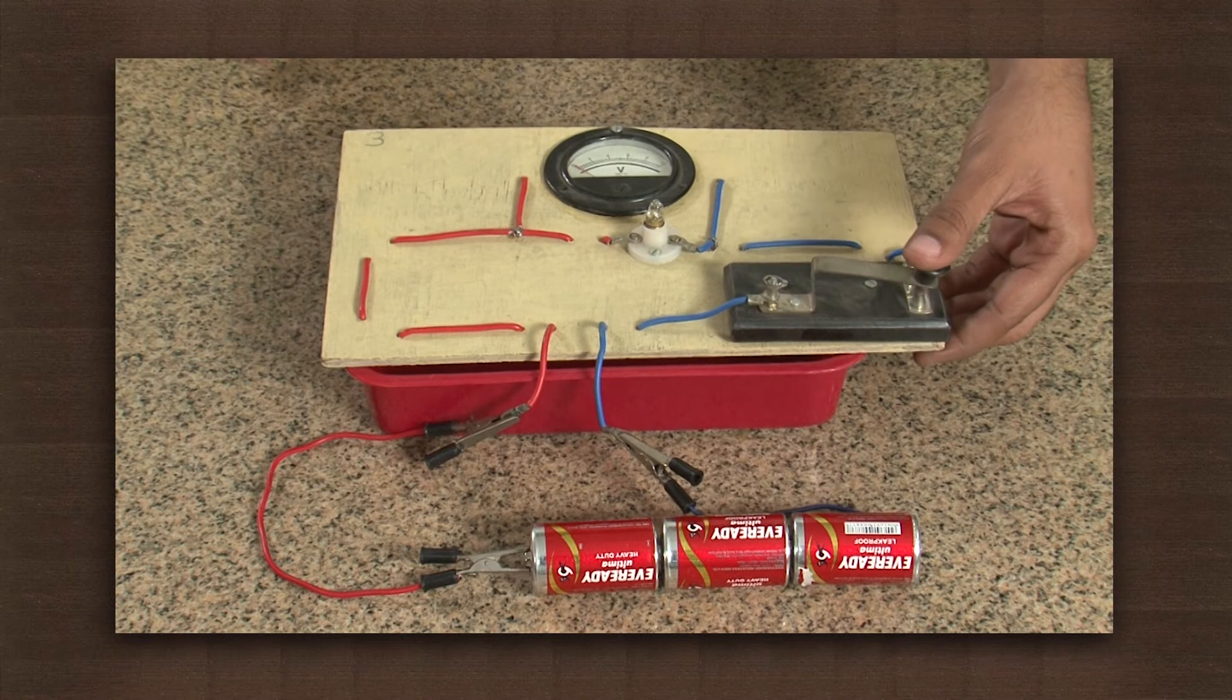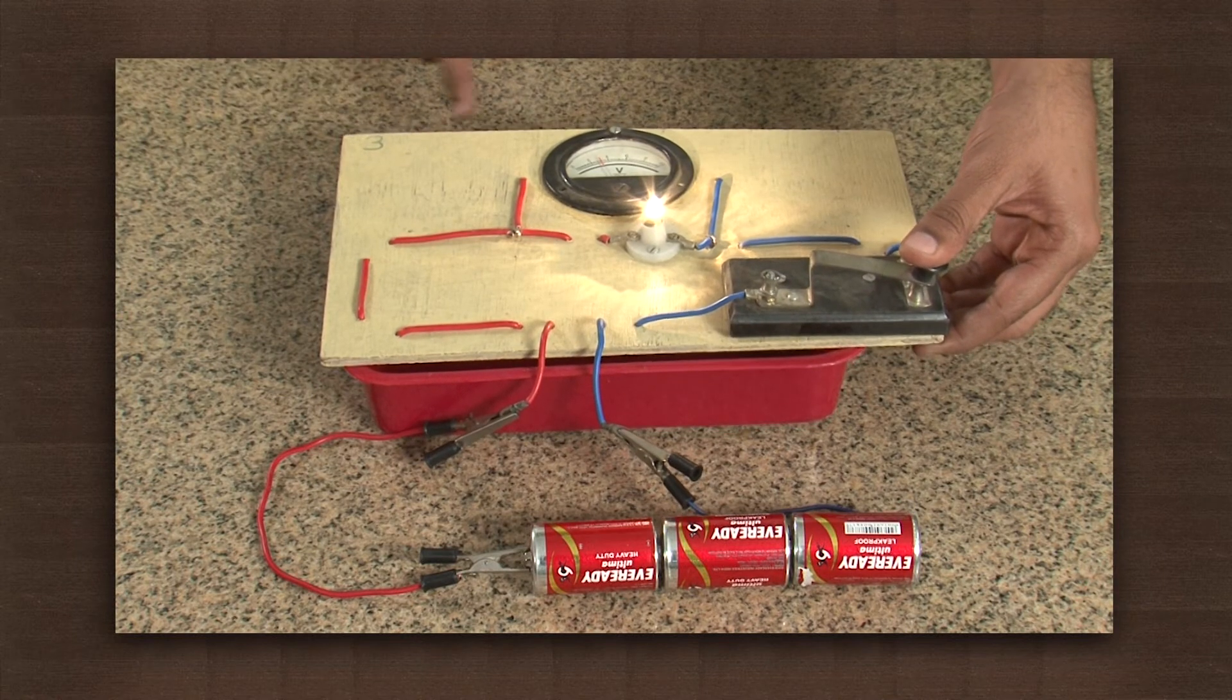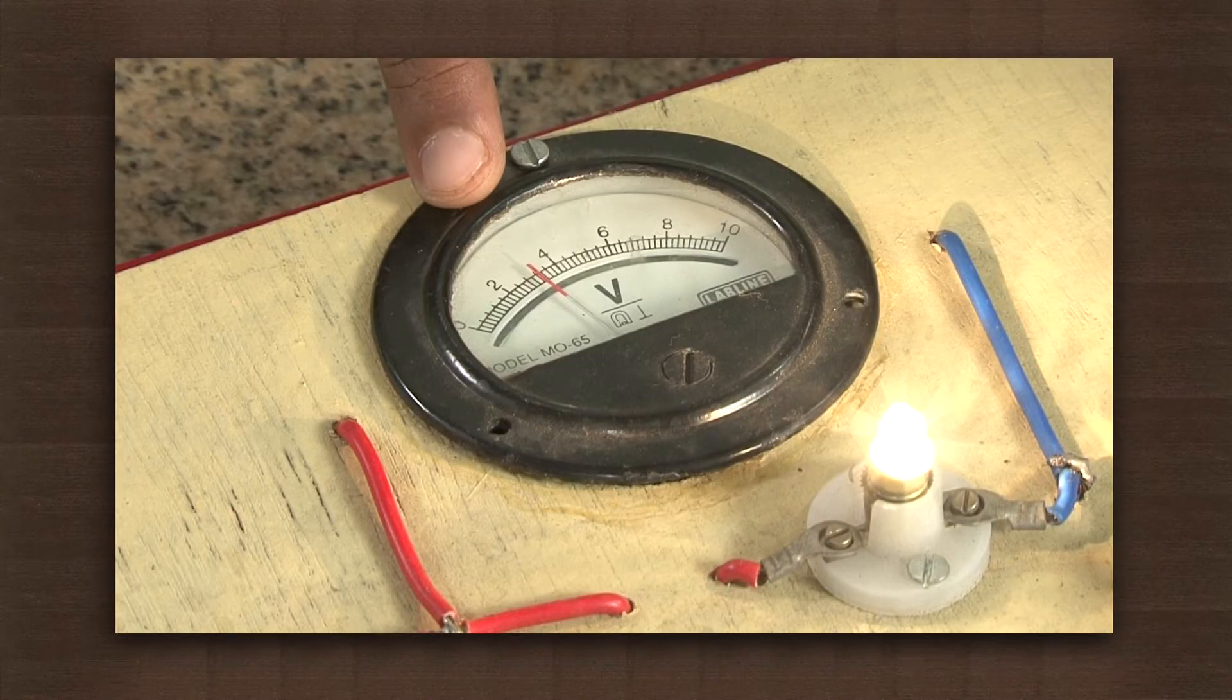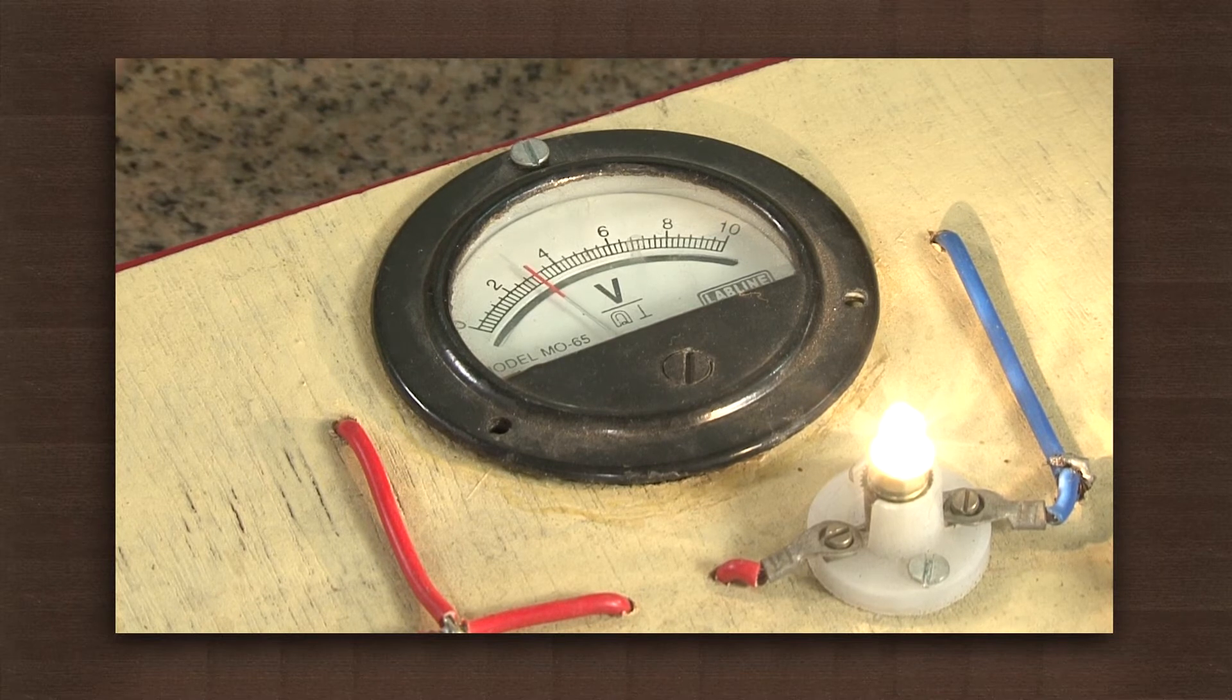Now connect the three cells. We see the bulb glows brighter, and the voltmeter reads 2.6 volts. So this reading is higher than the previous reading.